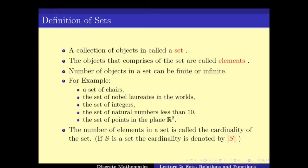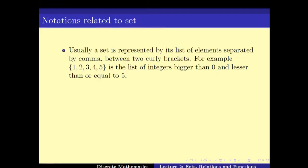Moving on to some more notations about sets. Usually when we have to describe or represent a set, it is done by putting the elements separated by commas and between two curly brackets. For example, between these two curly brackets I have the elements 1, 2, 3, 4 and 5, all separated by commas. That means this represents the set {1, 2, 3, 4, 5}.